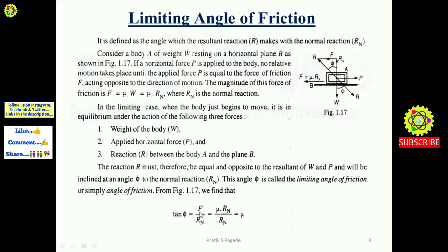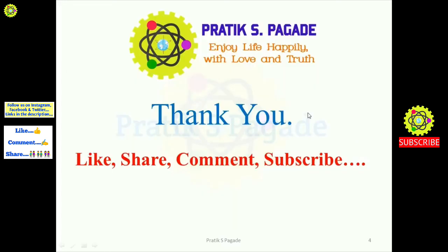We can simplify further: since the friction force F = μRN, substituting gives tan φ = μRN / RN. RN cancels out, so we remain with tan φ = μ, the coefficient of friction. So students, in this video we have understood about limiting angle of friction. Thank you for watching — please like, share, comment, and subscribe.